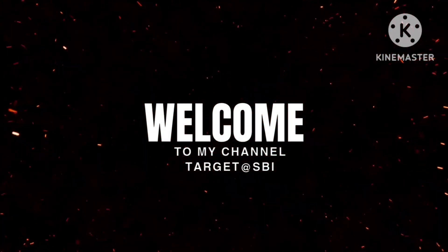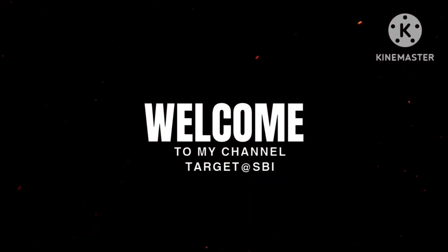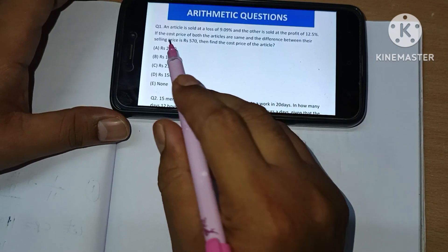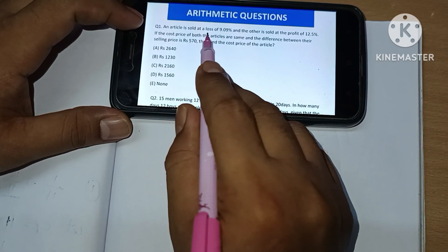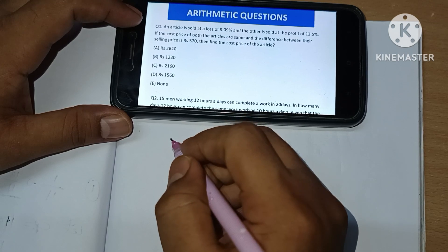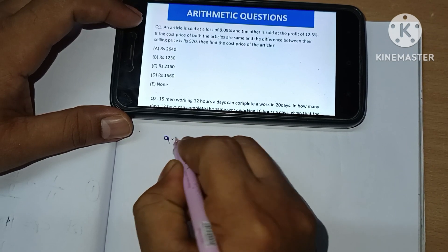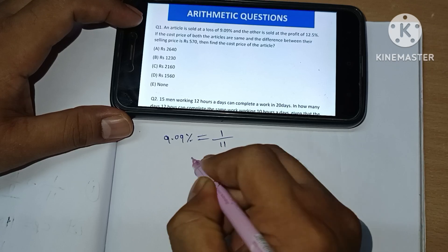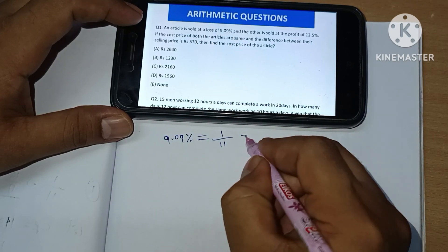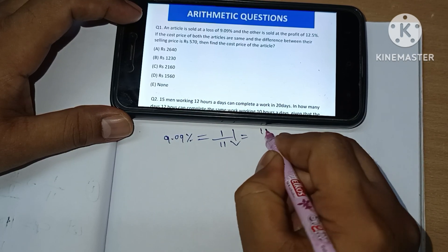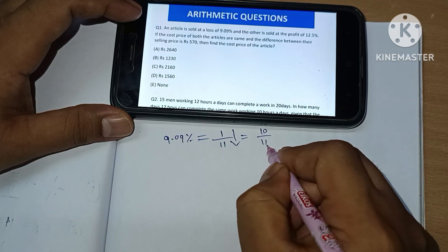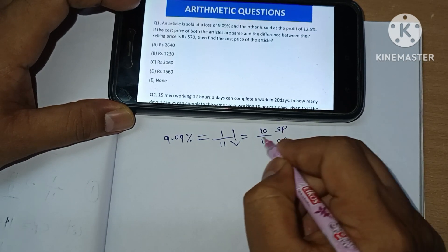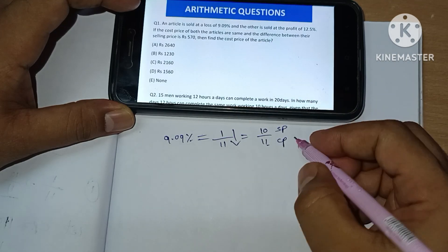Hello guys, welcome back to my YouTube channel Target SBI. From today onwards we are going to start five mixed arithmetic questions. First question: an article is sold at a loss of 9.09%, which means 1 by 11. Here loss means 10 by 11 - this 11 is cost price, 10 is selling price.